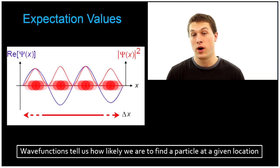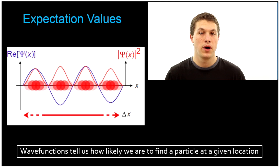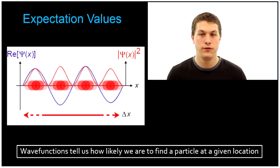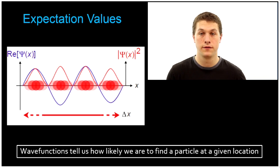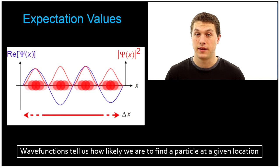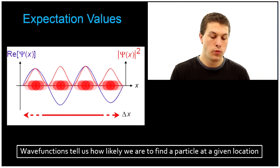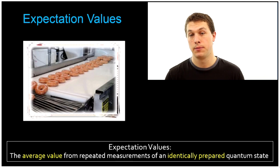If I have a quantum system described by a wave function, I know that when I square that wave function it'll tell me how likely I am to find a particle at a given spot. But you might be interested in knowing where on average you'll find it, because if you measure a quantum state different times you'll get different answers. So what we want to know is what on average are we expected to get? Expectation values are the average value from repeated measurements on identically prepared quantum states.